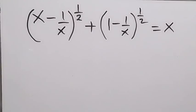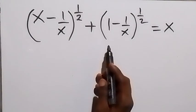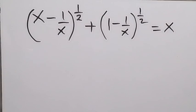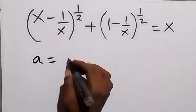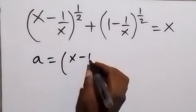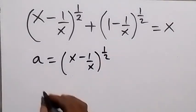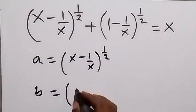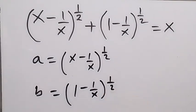Hello, you are welcome. How to solve this problem: the bracket (x minus 1 over x) raised to the power half, plus (1 minus 1 over x) raised to the power half, equals x. From here, let a be equal to the first bracket, which is (x minus 1 over x) raised to the power half, and let b be equal to the second bracket, which is (1 minus 1 over x) raised to the power half.